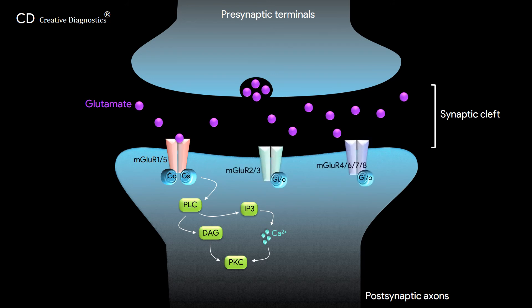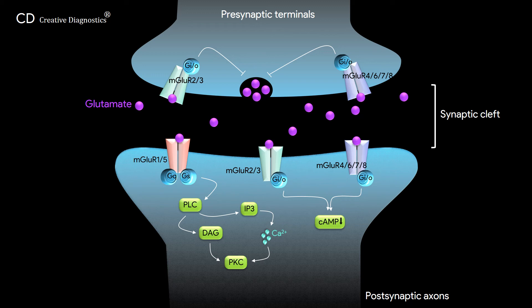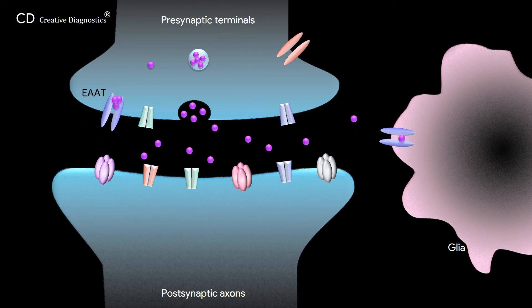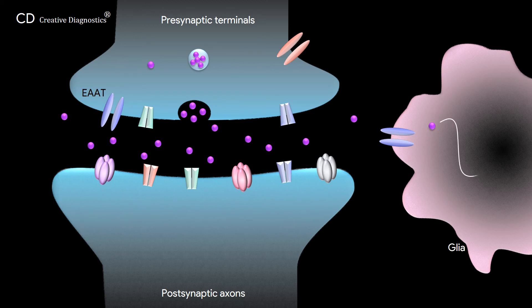Group 2 and Group 3 metabotropic receptors are situated not only postsynaptically, but also presynaptically, where they function to suppress excess glutamate transmission. Glutamate can be cleared from the synaptic cleft by excitatory amino acid transporters expressed either on the presynaptic terminal or neighboring glial cells. In glial cells, glutamate is converted to glutamine, which is then transported back to the presynaptic terminal and converted back to glutamate.